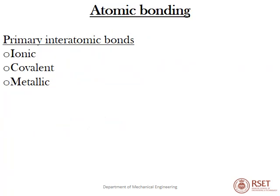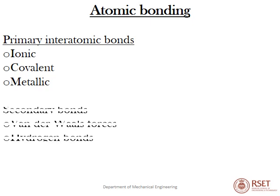The three types of primary interatomic bonds are ionic bonding, covalent bonding, and metallic bonding — all considered strong bonds. Secondary bonds include van der Waals forces and hydrogen bonds, which are much weaker. For example, in graphite, covalent bonds exist between carbon atoms within layers, but different layers are bonded by van der Waals forces — much weaker — which is why graphite is considered a softer material.